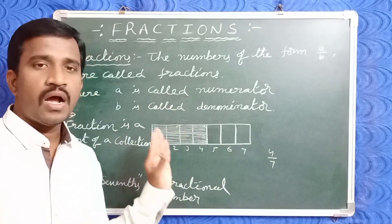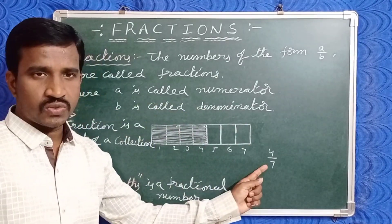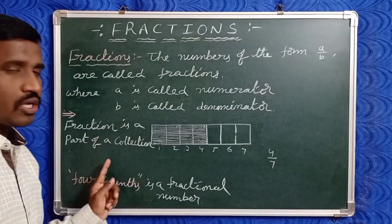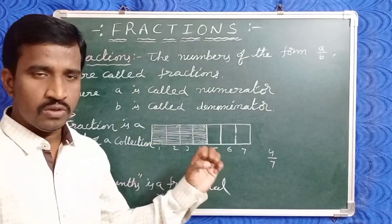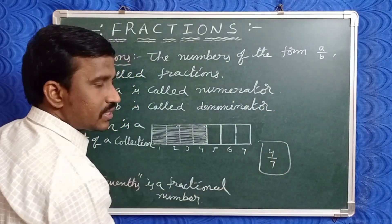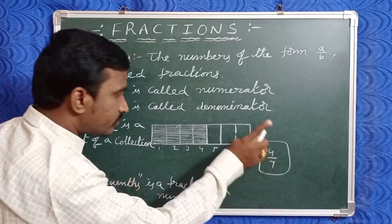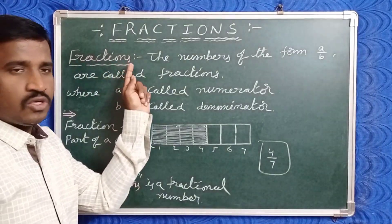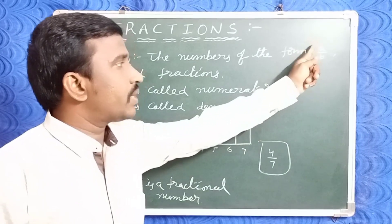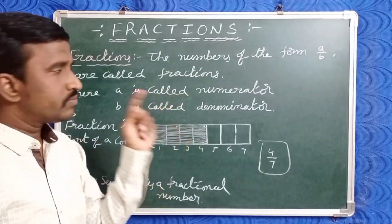Four by seven means out of total seven parts, four parts are shared. So a fraction is a part of a whole, or a fraction is a part of a collection. Here, total seven parts and we share four — that's why the fraction is four by seven. Any number in the form of a/b, like four by seven, is called a fraction or fractional number.